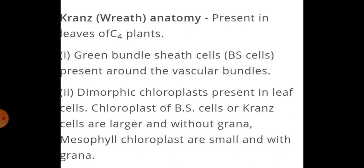Now, dimorphic chloroplasts are present in leaf cells. The chloroplasts of bundle sheath cells, also called Kranz cells, are larger and without grana. Mesophyll chloroplasts are small and with grana. So there are two types of chloroplasts present in leaf cells — that is what we mean by dimorphic chloroplast.